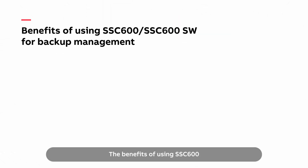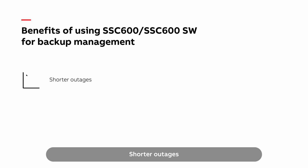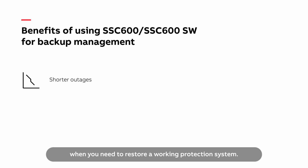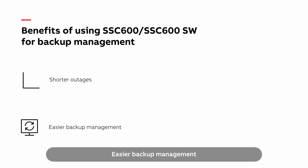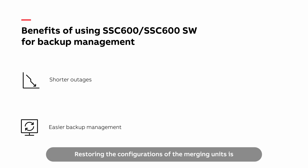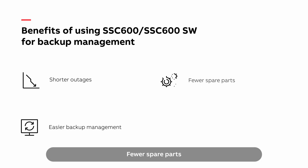The benefits of using SSC600 or SSC600 software for backup management are: shorter outages — as the configuration backups are always up to date, there will be no extra time lost when you need to restore a working protection system. Easier backup management — no specialist know-how is needed. Restoring the configurations of the merging units is conveniently done with a user-friendly and intuitive web interface.